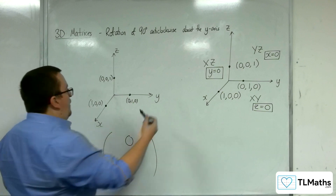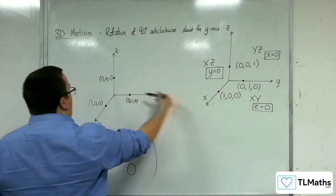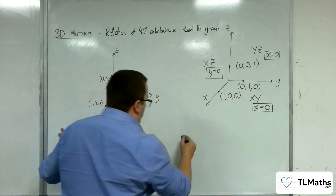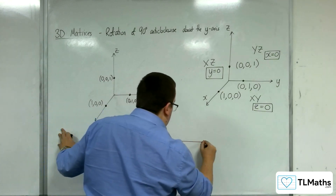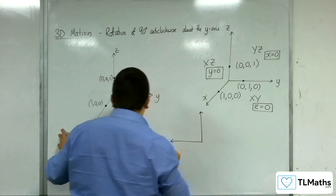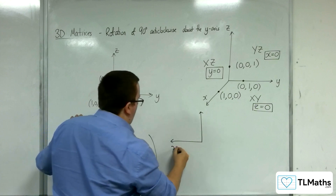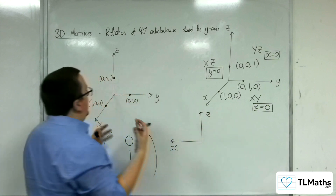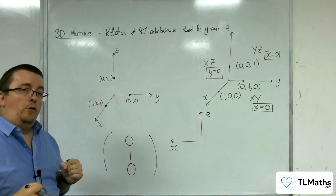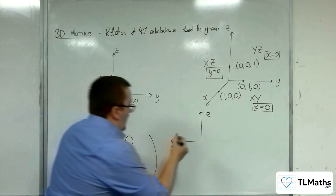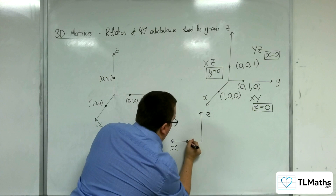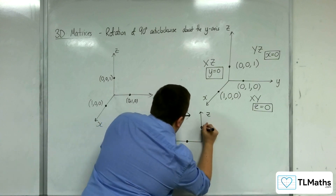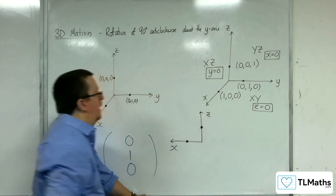So, if I'm looking down that way, what I'm seeing is my x and my z in this form. Here is (1, 0, 0). Here is (0, 0, 1).